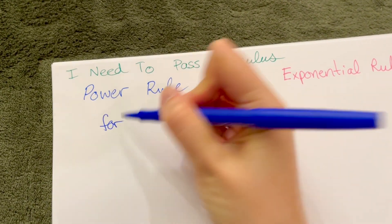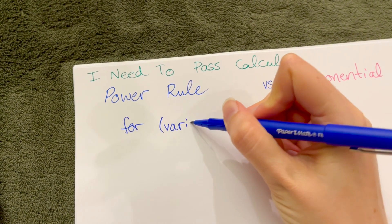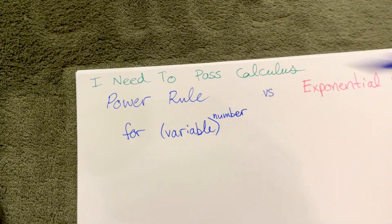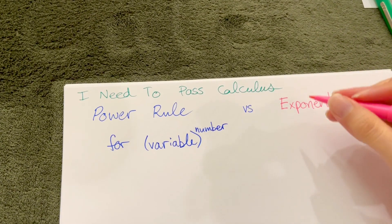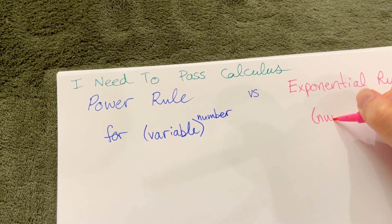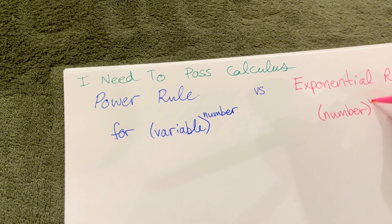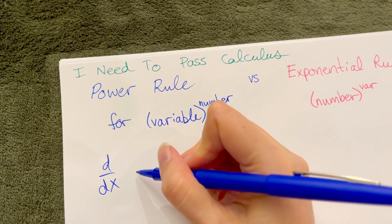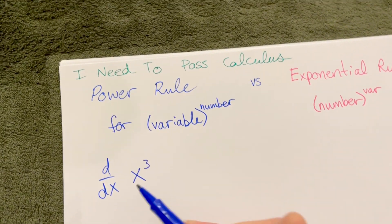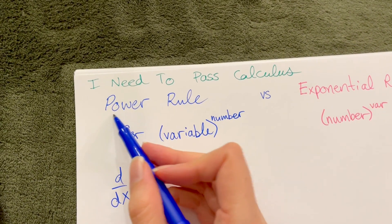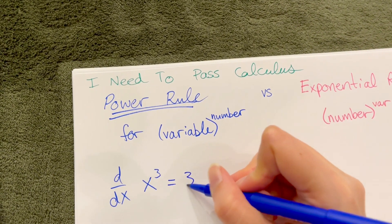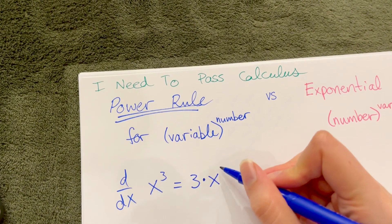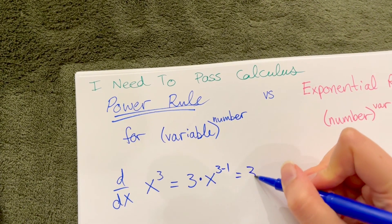The power rule is for when you have a variable to the power of a number, whereas the exponential rule is the opposite — it's when you have a number to the power of a variable. For instance, if you need to take the derivative of x to the third power, that's a variable to a number power — a perfect use of the power rule. You take the exponent, bring it down out front, the variable stays, and subtract one from the exponent. So our final answer would be 3x squared.